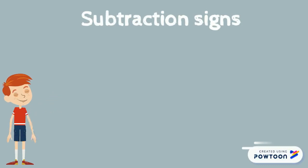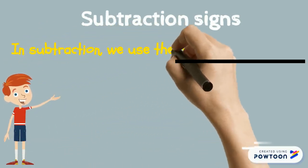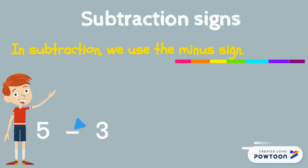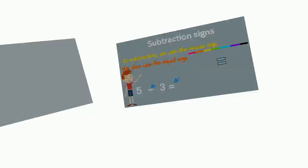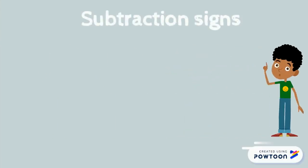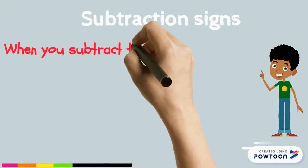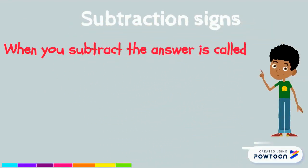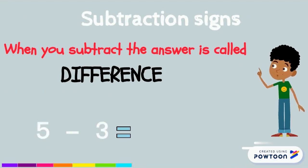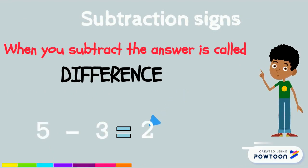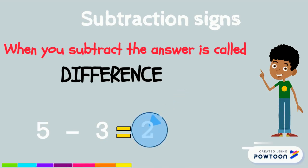Subtraction signs. In subtraction, we use the minus sign. It means subtract or to take away. And we also use the equal sign. Also, when you subtract, the answer is called difference. And five minus three equals two. The difference is the number two — the last number that you see in the equation.